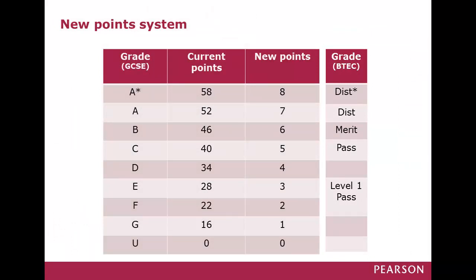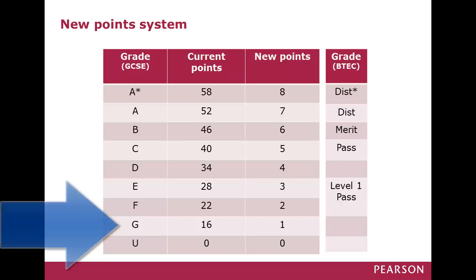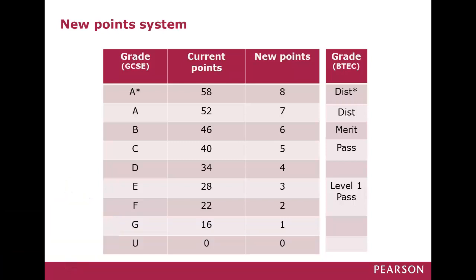2 main points to note. The cliff edge at the bottom has disappeared — under the old points scale you lost 16 points for each grade U, almost cancelling out 3 grades of improvement by other students. The differential between the points for a grade G and an A* has been increased from about 3.5 times to 8 times, to encourage schools to push students to higher grades.